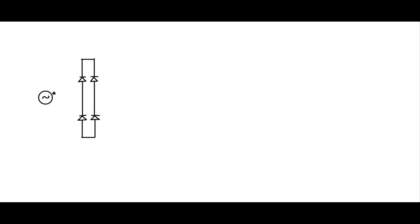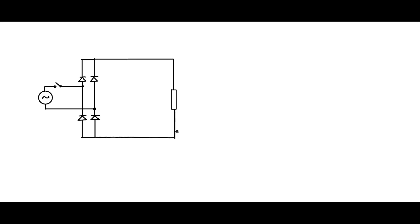Let us now draw a passive power factor improved circuit. Let me put in the source and the diode bridge — we are familiar with this diode bridge — then connect the source through a switch and across the bridge. This portion is the sine wave source followed by a rectifier. Let me draw the load R naught connected across the rectifier capacitor. Normally we would have connected a capacitor like this, but we want to modify this into an improved power factor configuration.